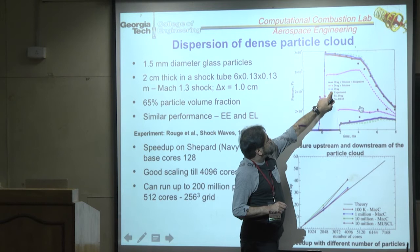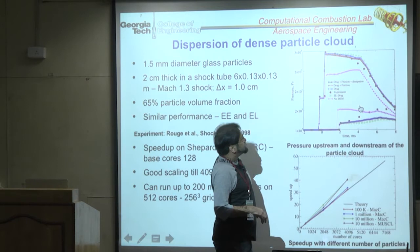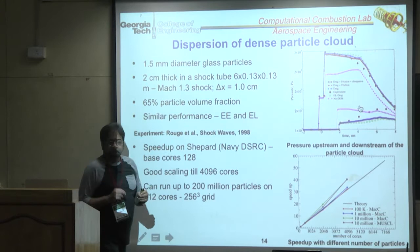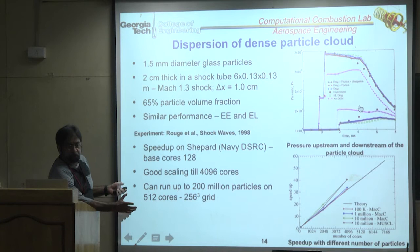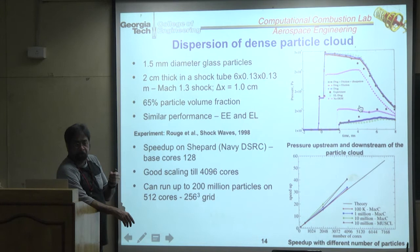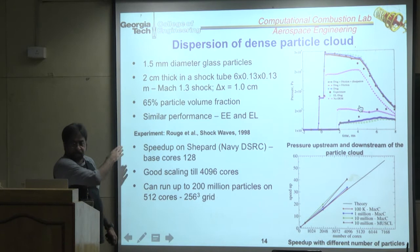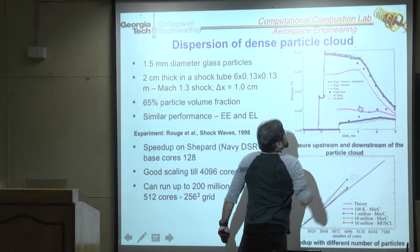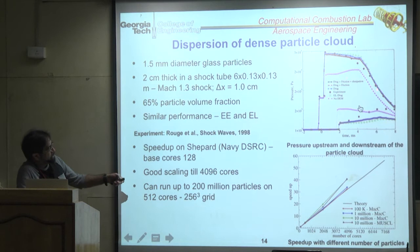Without the DEM dense correction, the Lagrangian method completely misses the physics. With DEM correction, results approach experimental data. Typical Eulerian-Lagrangian is valid at volume fractions of 10^-7 to 10^-3; running at 0.65 is an extreme upper limit chosen specifically to demonstrate the importance of the DEM correction.